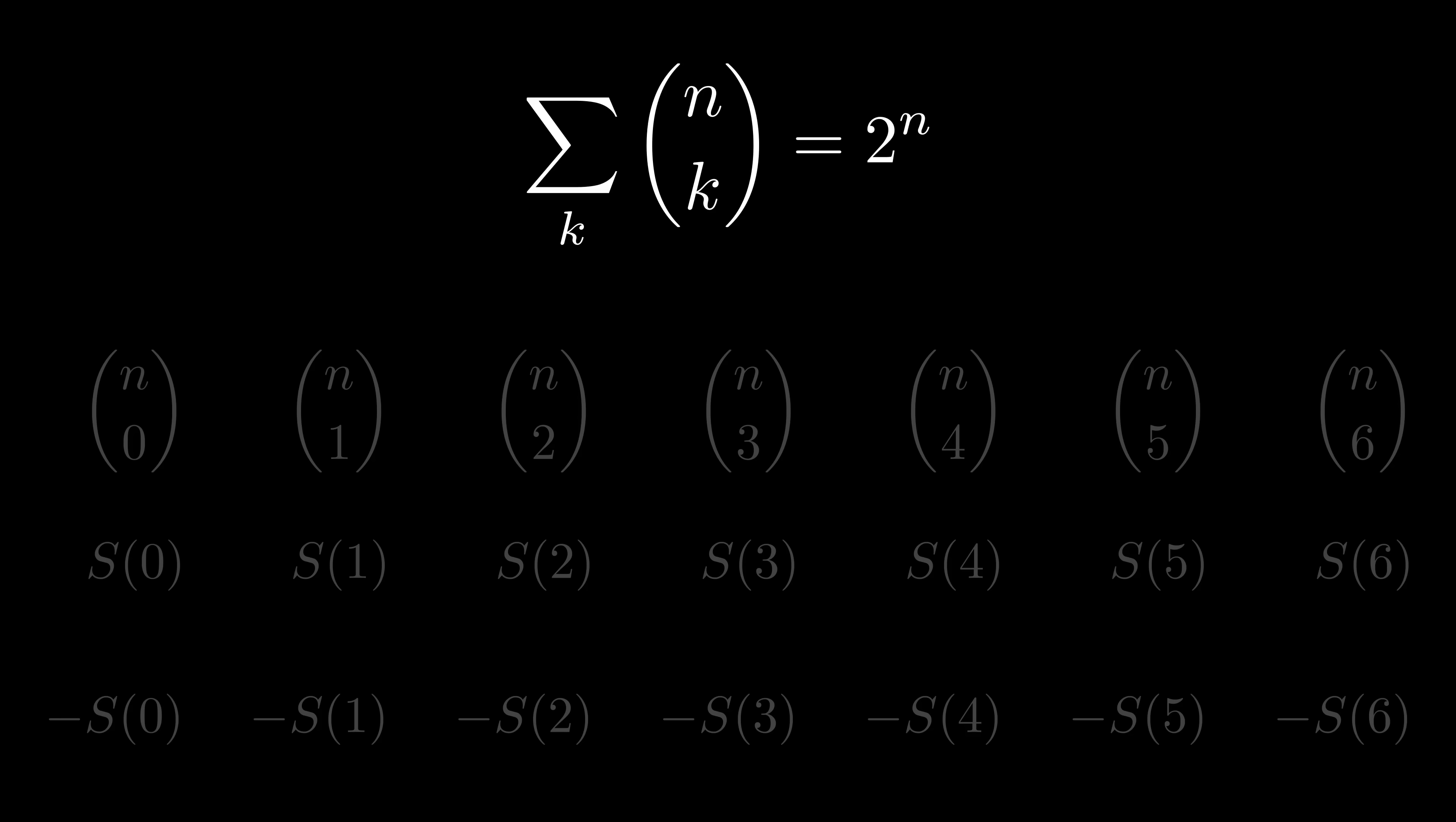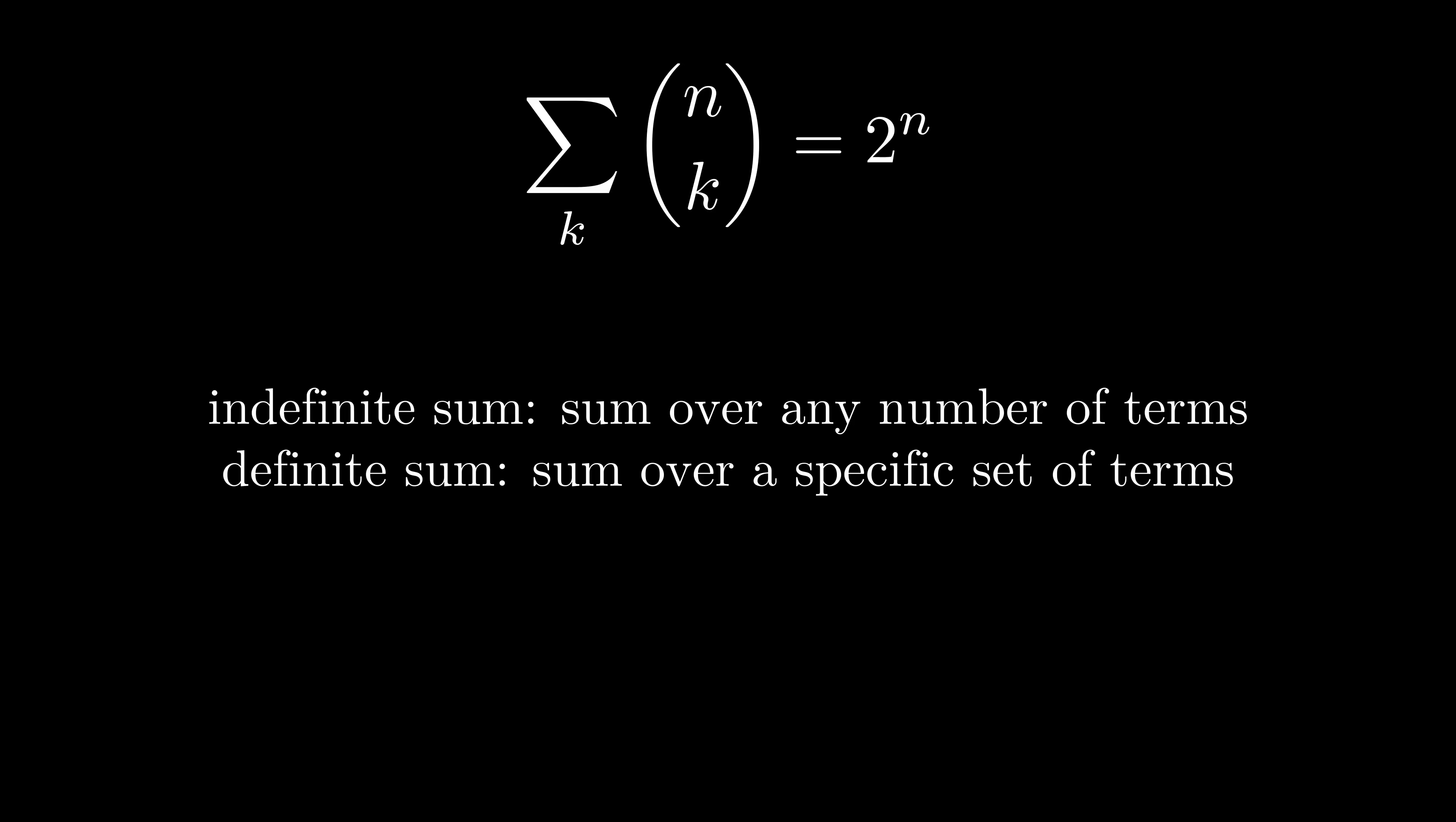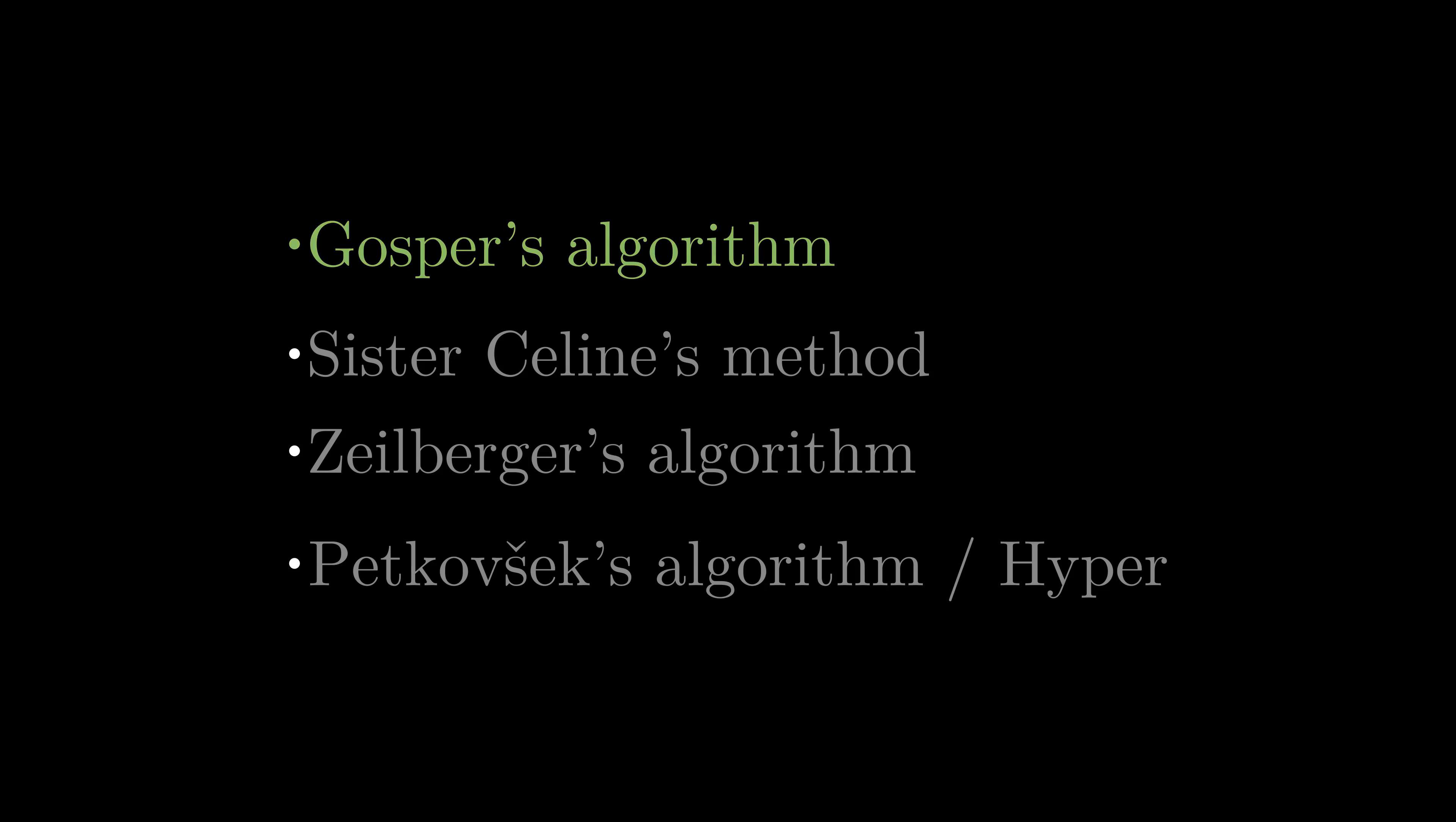We know that if a telescoping term exists, then for any number of terms, we can find a closed form. We would have a formula for the sum over any k terms. However, just because a telescoping term doesn't exist, doesn't mean that we can't find a closed form for the entire sum. A closed form for the sum over any number of terms is called an indefinite sum, whereas a closed form only for the sum over a specific set of terms is called a definite sum. For those of you with some calculus background, it's the same with integrals. As long as we have the indefinite sum, definite sums are easy. But having a definite sum is in no way an indicator that the indefinite sum can be expressed. This is why we will need the other algorithms to fully solve the problem of finding the closed form of hypergeometric sums.